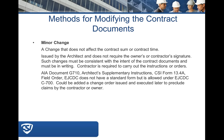CSI form 13.4A, Field Order, is a similar document. The EJCDC doesn't have a standard form for this, but the C700 would be the appropriate form to use for issuing supplemental instructions under their contract documents.